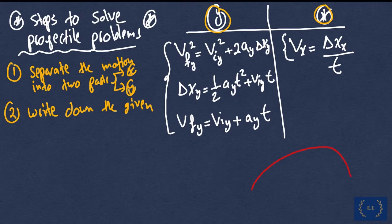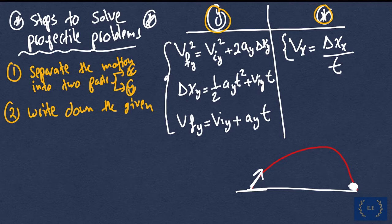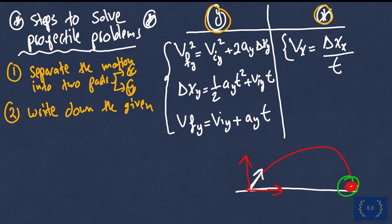So if we have this trajectory — this projectile motion — and the object has an initial velocity v, the object does not reach the ground at two different times. The object will reach any given state in both the x direction and the y direction at the same time. The only connection between the y motion and the x motion is time. This is a simple but important point to keep in mind.